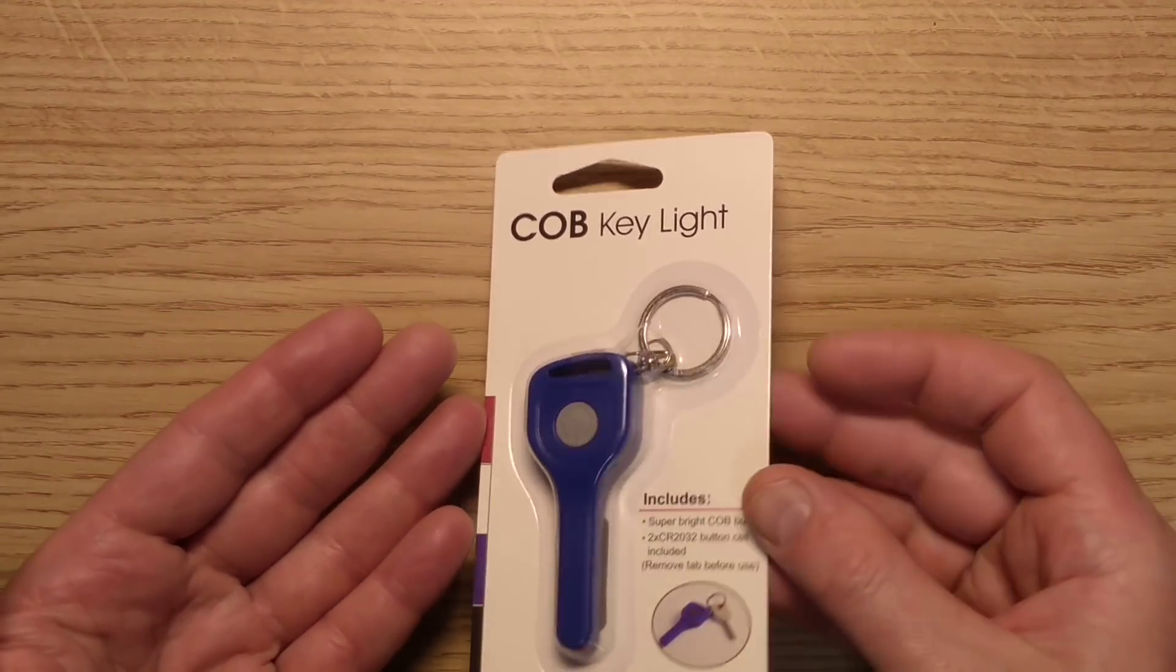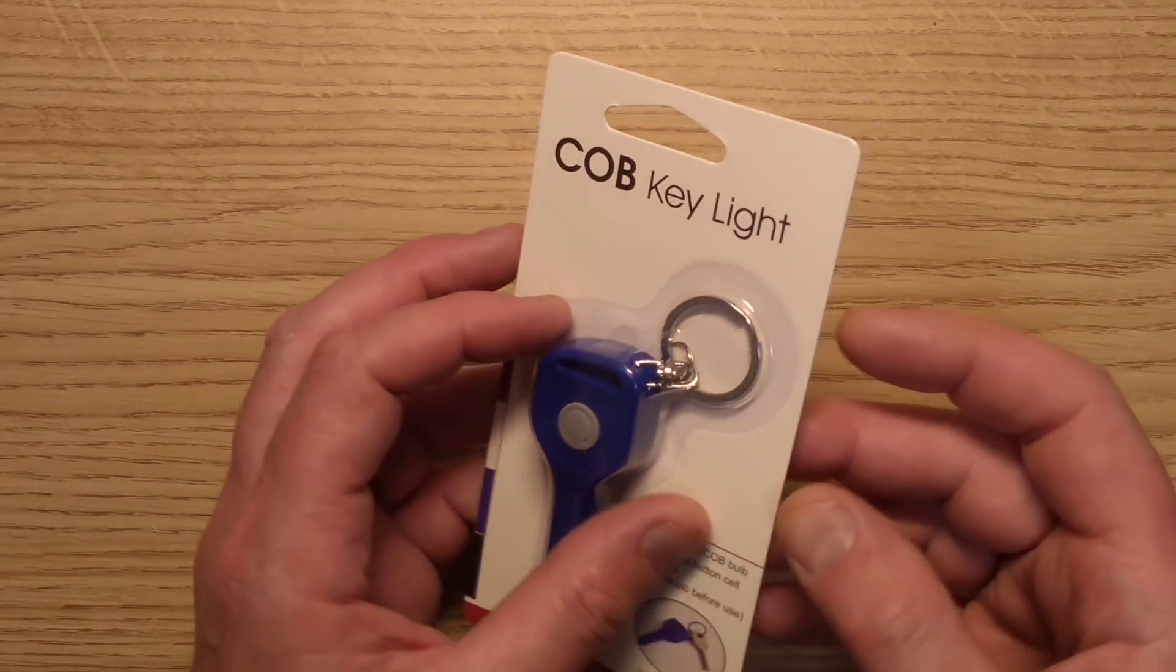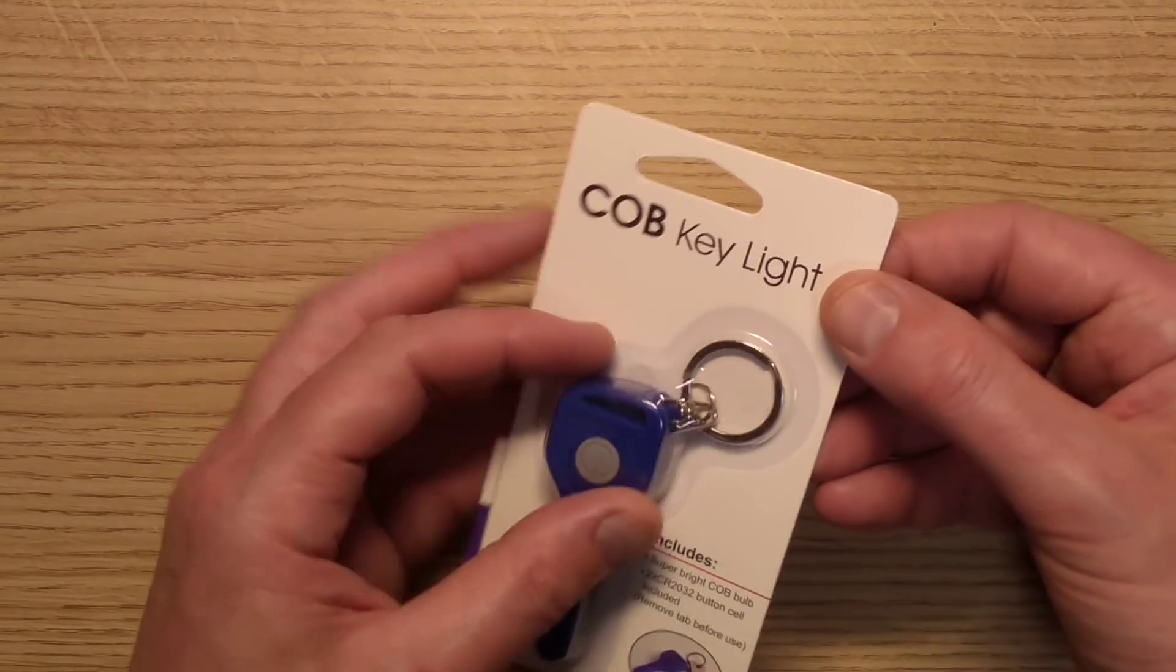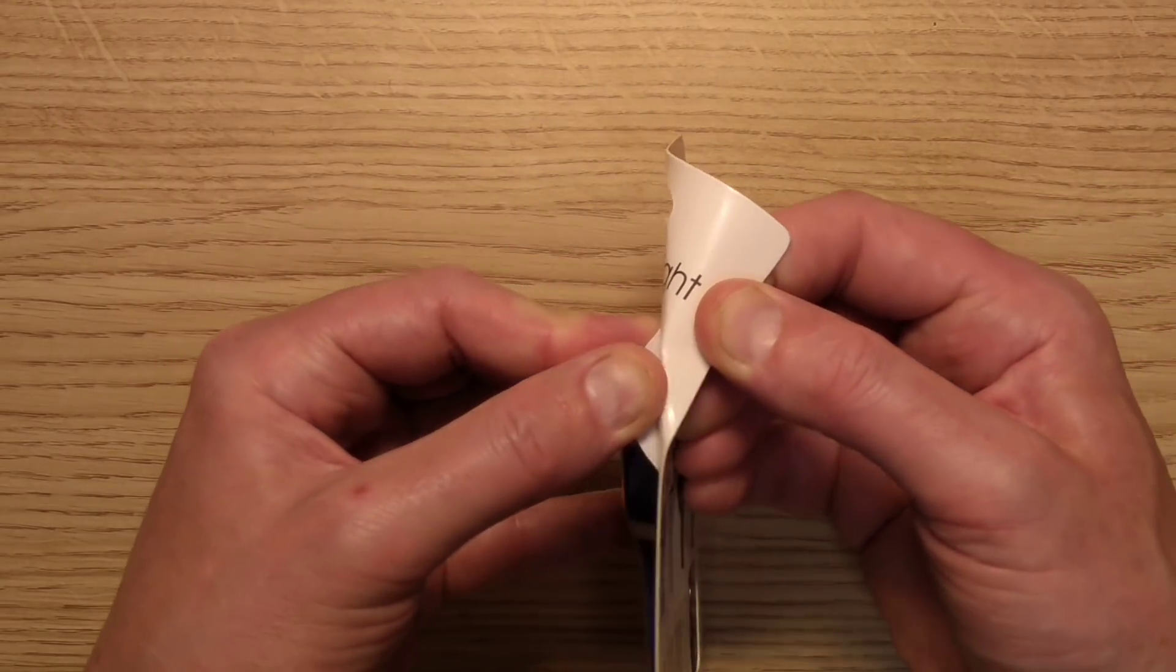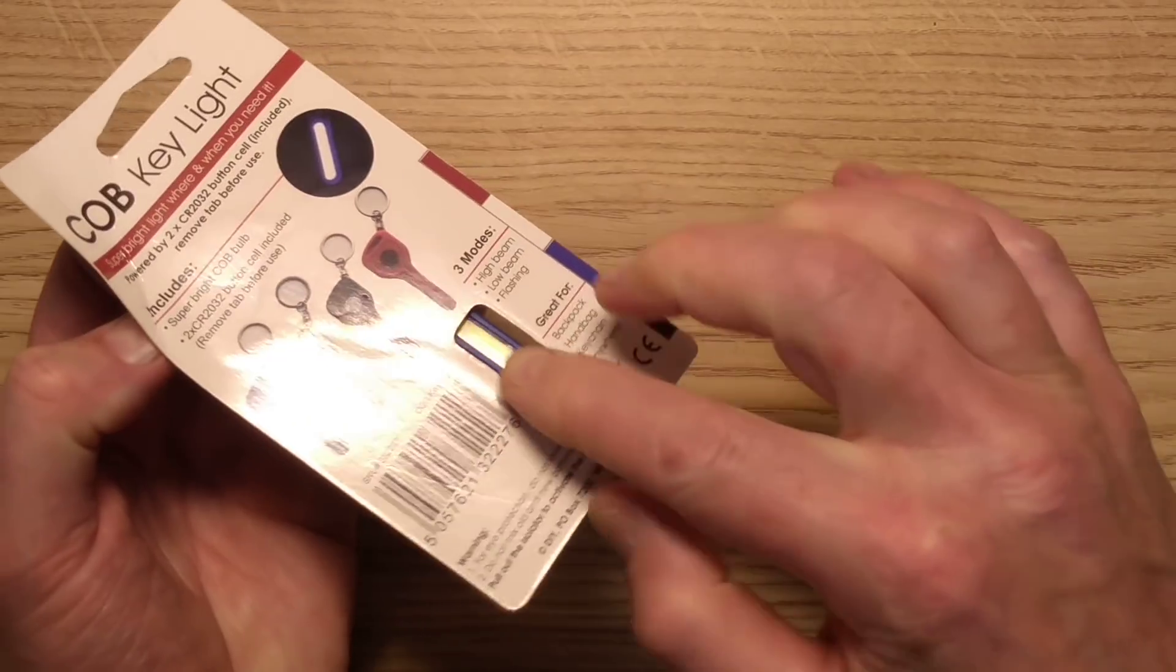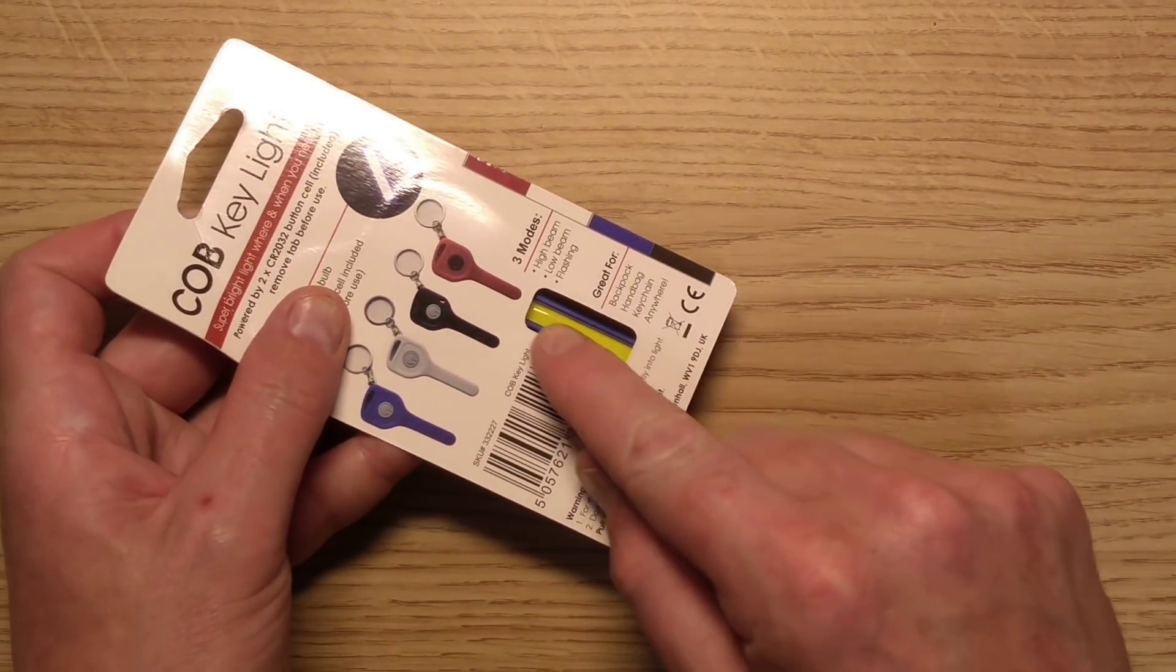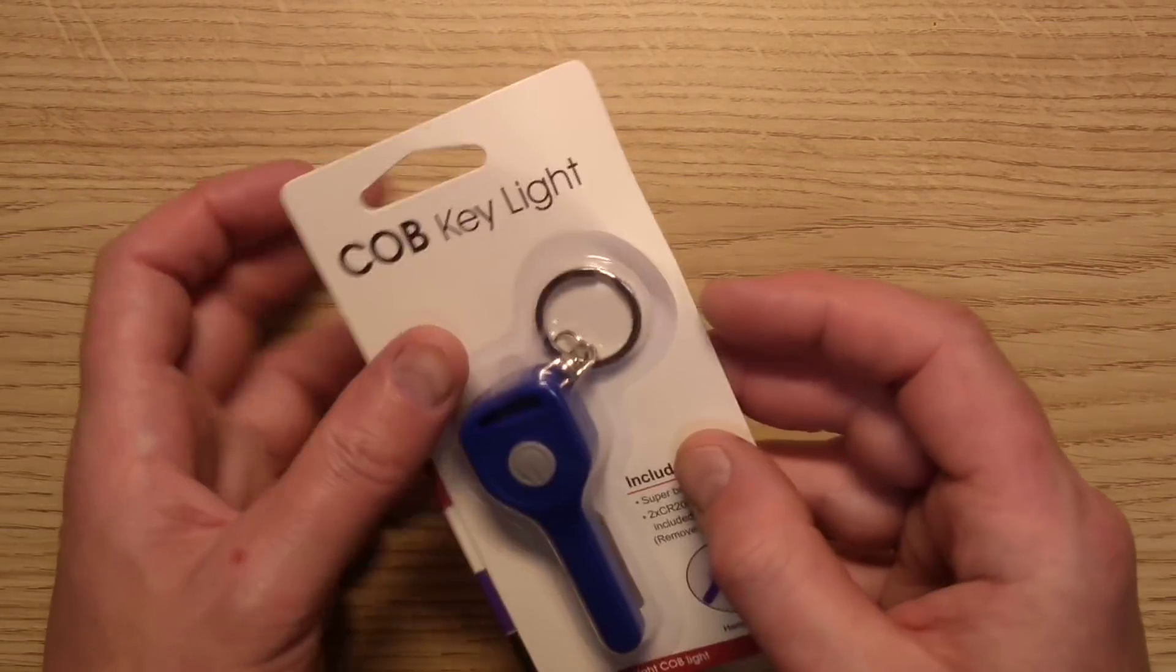Another of Poundland's finest LED products for the discerning connoisseur. This is a COB keylight. The idea is that you put it on your keychain. It's available in several colors and has this little COB array chip on board.